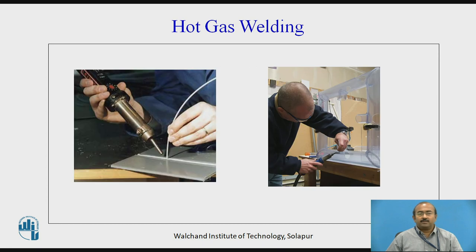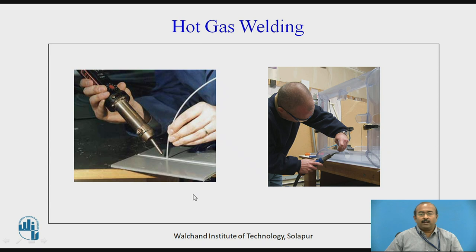Here are some images and photographs for hot gas welding. In the first image, you can observe that in the right hand the welding gun is held, through which hot air or hot gas is applied to the base material as well as the filler material held in the left hand. The filler material is normally present in the form of a wire. The filler material is filled into the cavity between two distinct elements. Manually, this process is continued for the fulfillment of the welding joint.